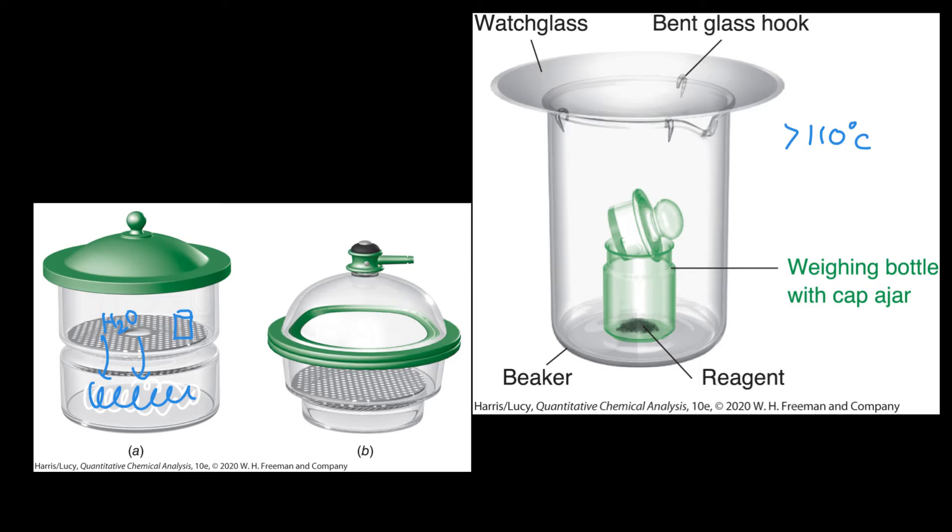The difference with a vacuum desiccator is that we actually remove the air using a vacuum pump. Then as we turn this top valve around, the little air hose can actually close and maintain a vacuum inside.